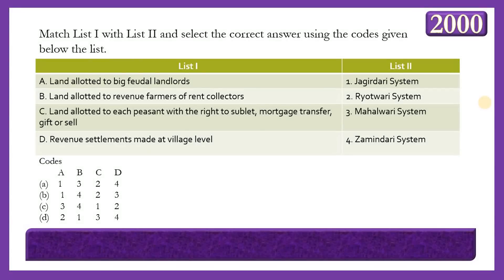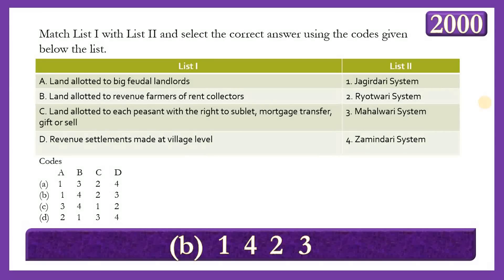Next is a matching question. Match List 1 with List 2: (A) Land allotted to big feudal lords, (B) Land allotted to revenue farmers or rent collectors, (C) Land allotted to each peasant with the right to sublet, mortgage, transfer, gift or sale, (D) Revenue settlement made at the village level. List 2: Jagirdari system, Ryotwari system, Mahalwari system, Zamindari system. The answer is option B — 1-4, 2, 3 — meaning land to big feudal lords was Jagirdari; land to Zamindars was Zamindari system; land to peasants with full rights was Ryotwari system; and village-level revenue settlement was Mahalwari system.